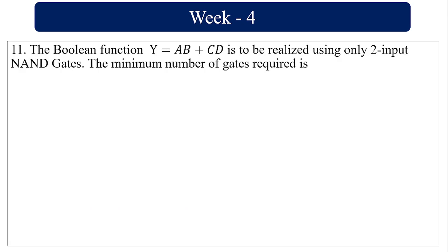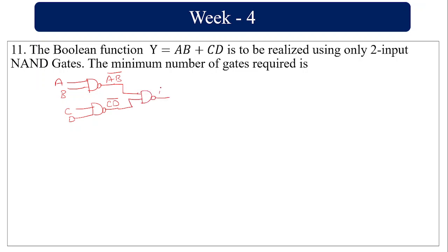The boolean function Y = ab + cd is to be realized using only two-input NAND gates. The minimum number of gates required: first NAND gate takes a and b to give (ab)'; second NAND gate takes c and d to give (cd)'; a third NAND gate takes (ab)' and (cd)' as inputs, giving (ab)'·(cd)' whole bar = ab + cd by De Morgan's theorem. So three NAND gates are required.